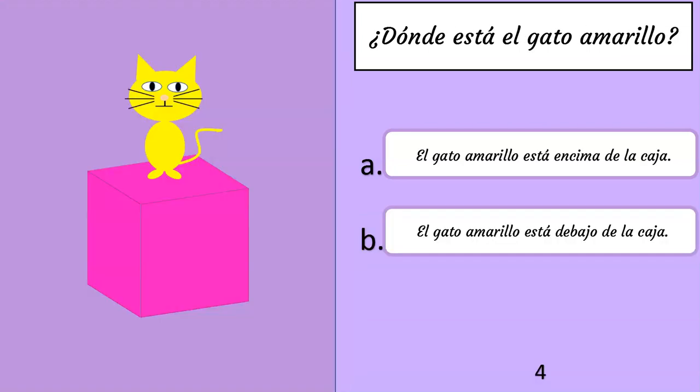¿Dónde está el gato amarillo? A: El gato amarillo está encima de la caja. B: El gato amarillo está debajo de la caja. The correct answer is A: El gato amarillo está encima de la caja.